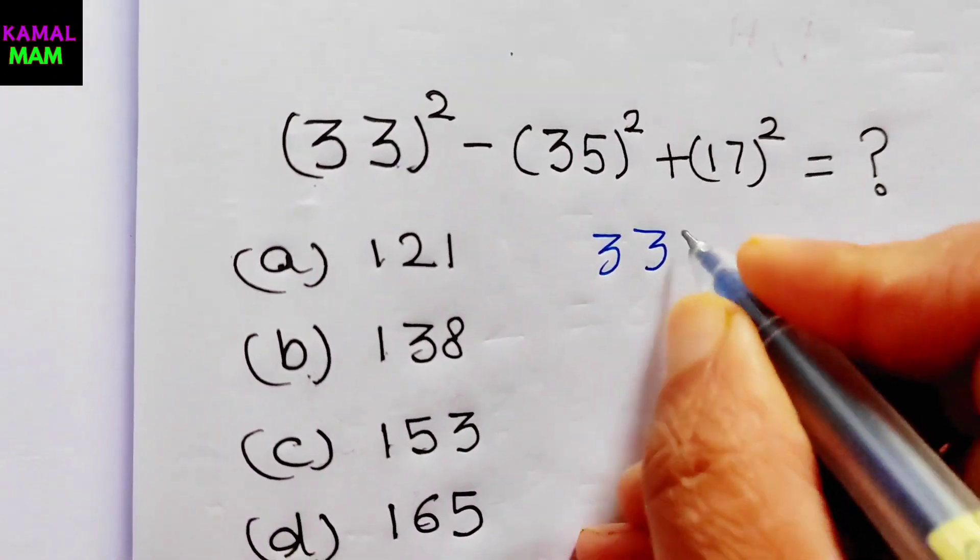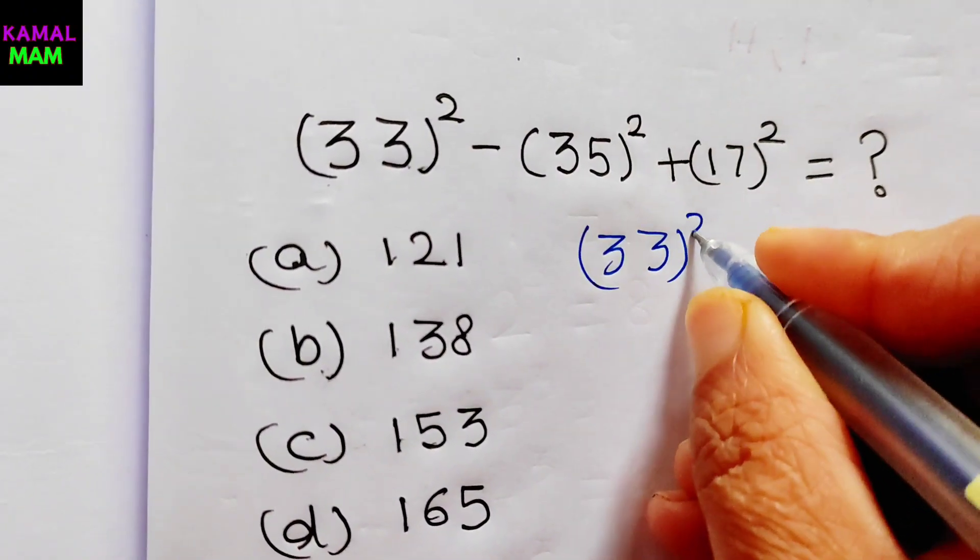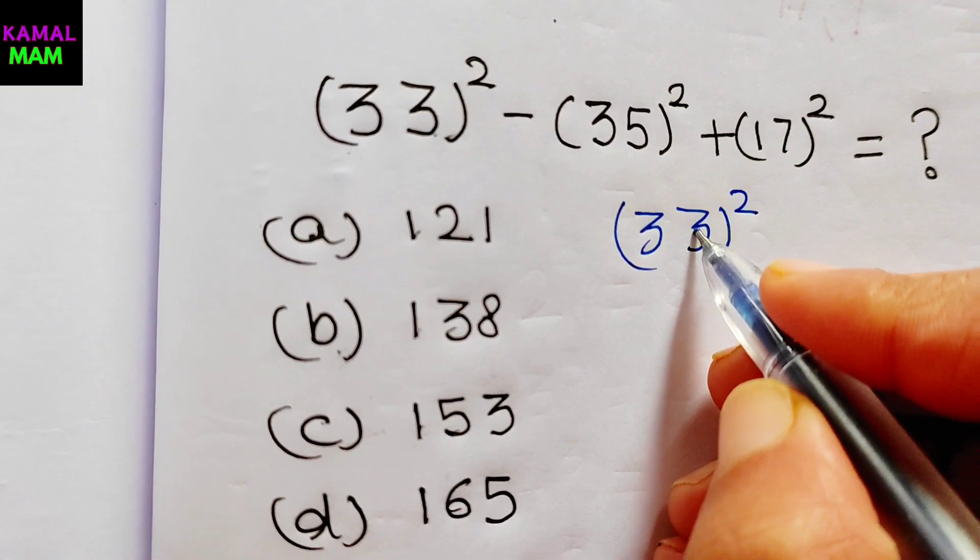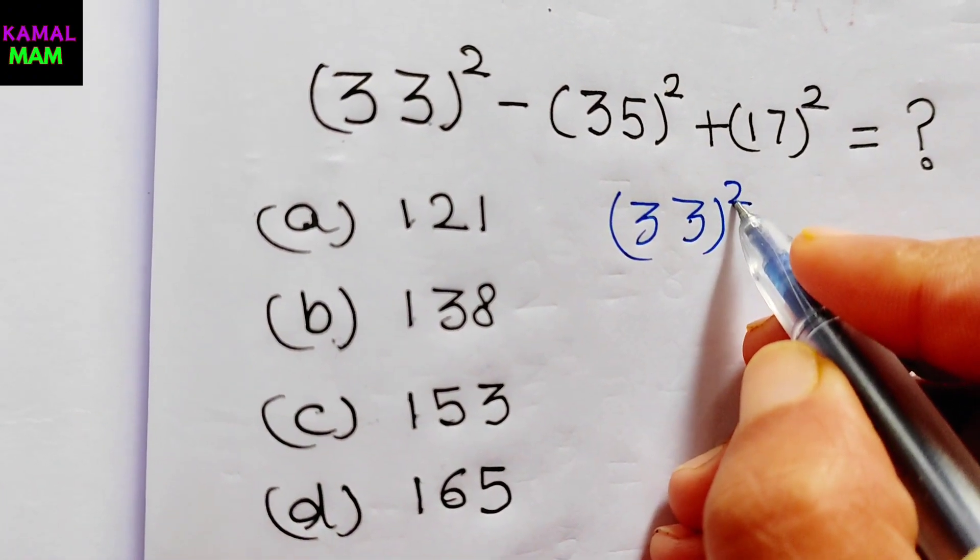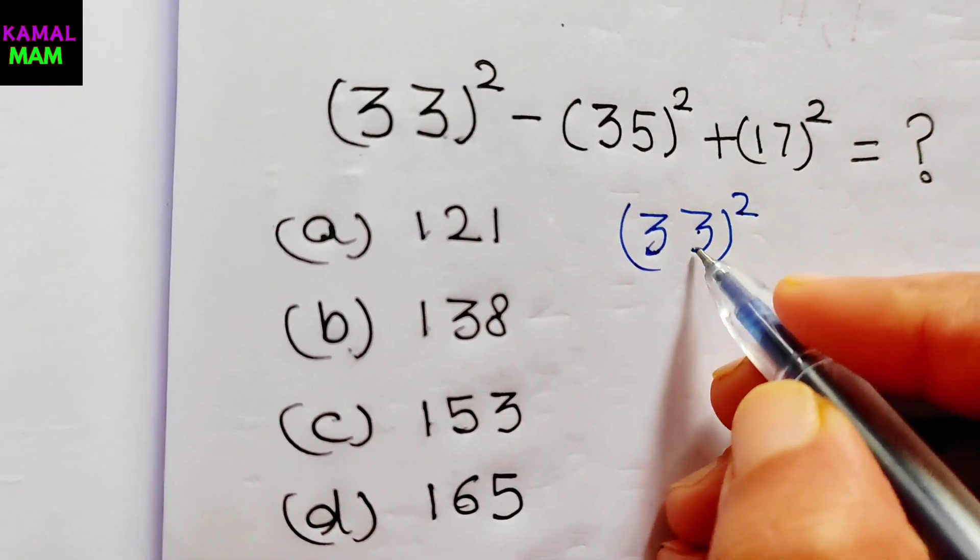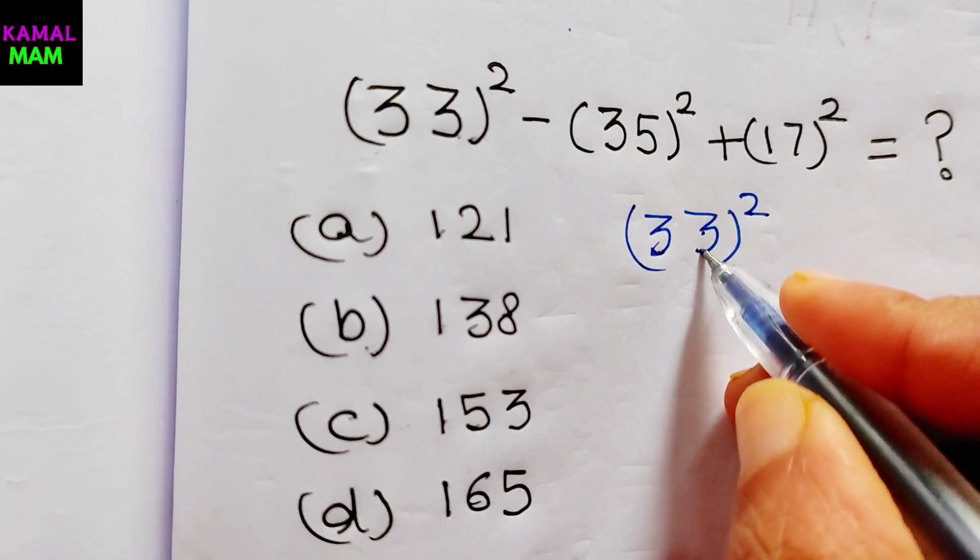There is a trick to solve this type of question. If the two digits are same, then how we can find the square of the number? Here is the trick. Then 3 times 3 is 9, so we are writing here 9.